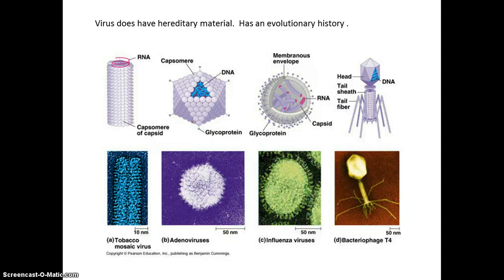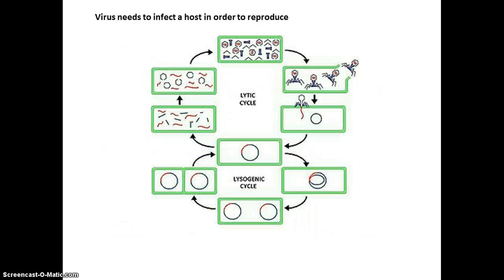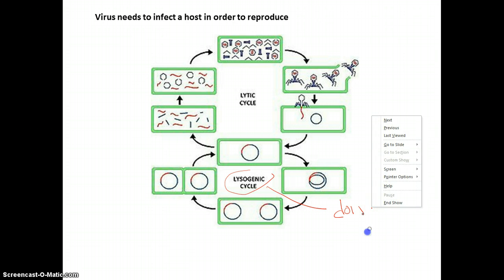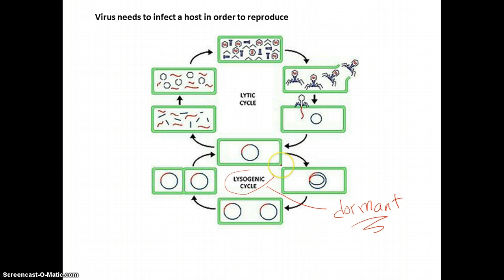That's why every year when you get a vaccination for a flu shot, it's a different cocktail in that vaccination to address potential new flu viruses, because that flu virus evolves. Now, viruses reproduce, but they can only reproduce by using another cell. There are basically two types of cycle. The first cycle is called the lysogenic cycle, and this word means dormant — when something is dormant, that means it's inactive, and it just stays in the cell and does not disrupt normal cell business.